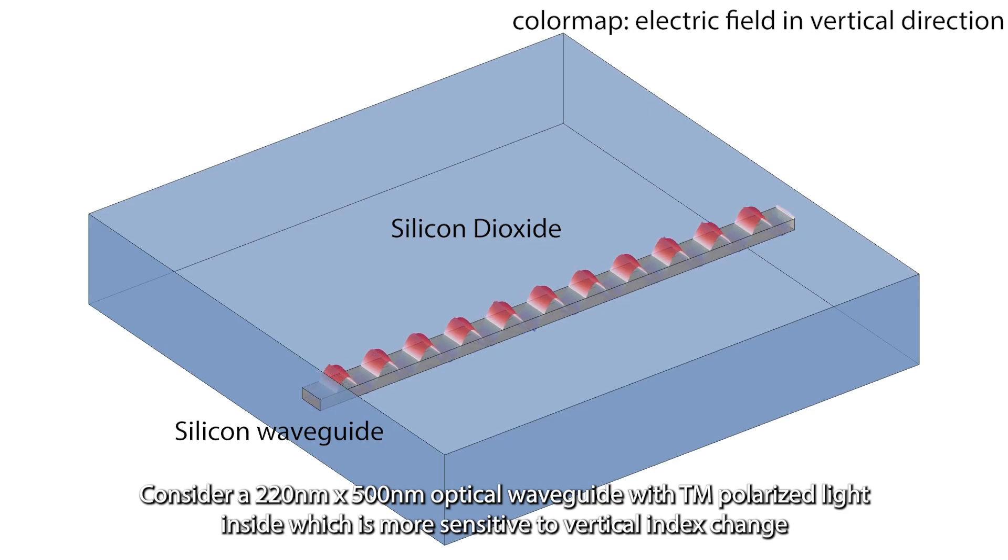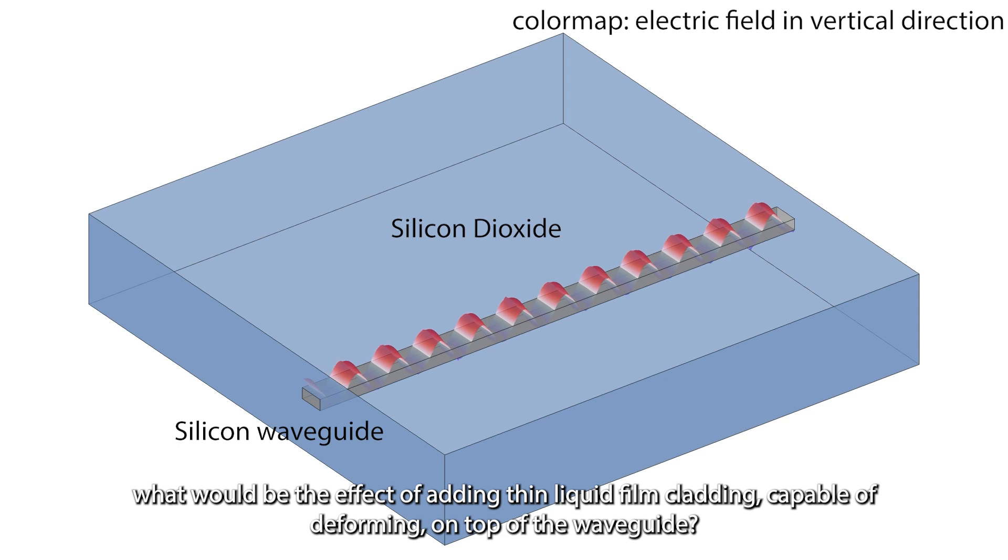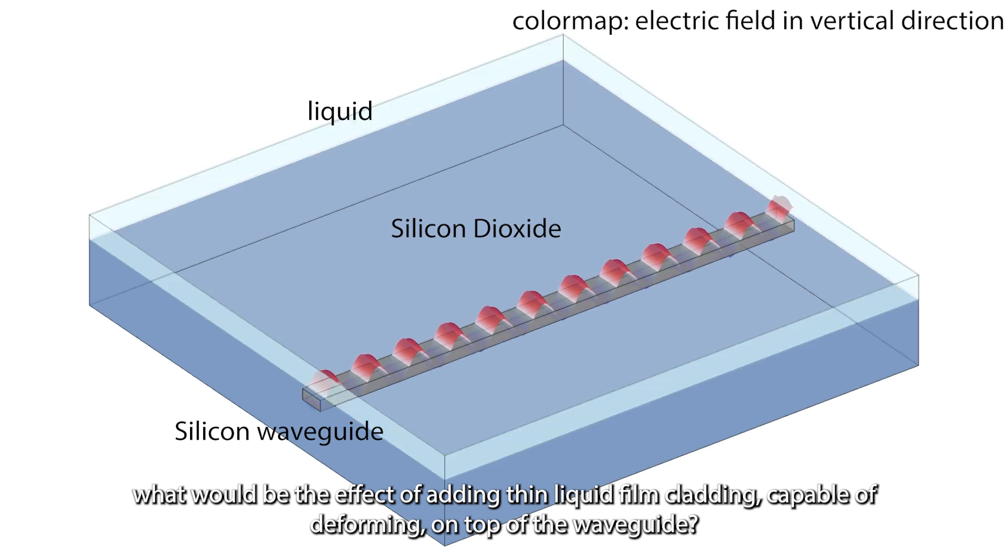Consider a 220 by 500 nanometer optical waveguide with TM polarized light inside, which is more sensitive to vertical index change. What would be the effect of adding thin liquid film plating, which is capable of deforming on top of the waveguide?